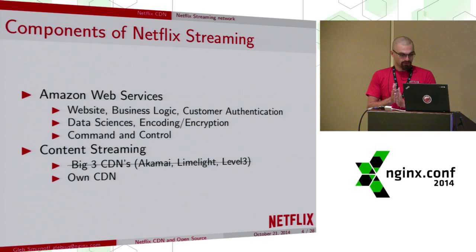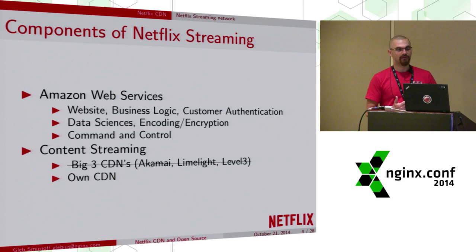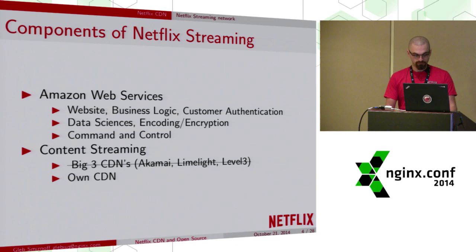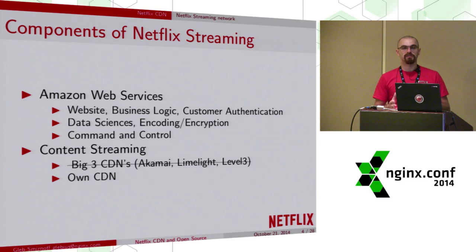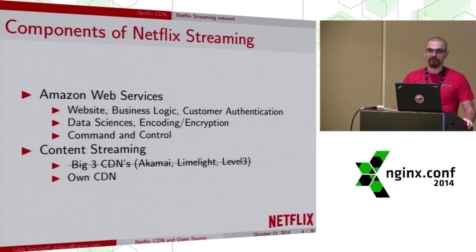We run all the complex stuff in the Amazon cloud — business logic, data mining, encoding of videos, recording, resizing, encrypting. The actual video streaming is also started by Amazon. The client logs in on the website, authenticates itself, and the cloud controls its operation. But all the bulk video data — that one third of internet traffic I just showed you — is served by a content delivery network.